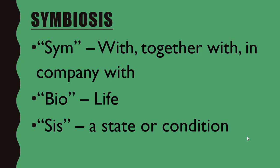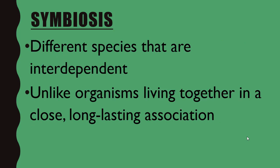Your first vocabulary word is Symbiosis, broken down into three parts: prefix, root word, and suffix. The prefix is 'sym,' which means 'with,' 'together with,' or 'in company with.' The root word is 'bio,' which means life, and the suffix is '-sis,' which is a state or condition. Put together, it's basically a state or condition of life together with other life. The official definition is different species that are interdependent — meaning they depend upon each other — living together in a close, long-lasting association.